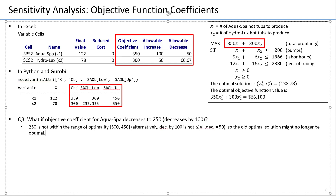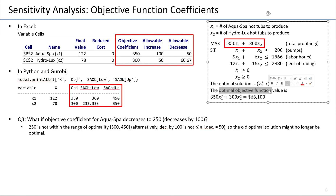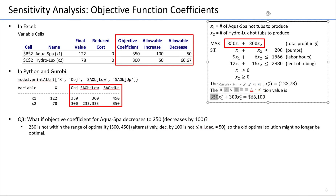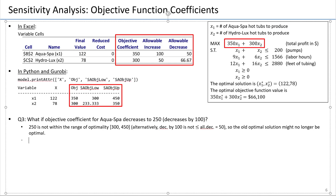Since we no longer have this as an optimal solution, I don't know what will happen to the optimal objective function value. I know the objective function will be 250 times x1 plus 300 times x2, but I no longer know what x1 and x2 will be, because the optimal solution might change. We actually can say something about the optimal objective function value — we just cannot say exactly what will happen.